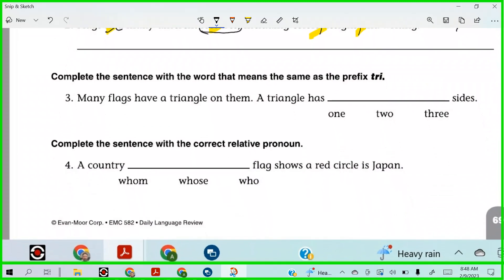It says, complete the sentence with the word that means the same thing as the prefix, try. Many flags have a triangle on them. A triangle has, what is it? Three sides. Very good. That was a pretty easy one, right?